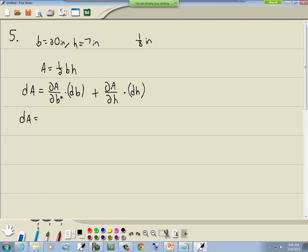Partial of A with respect to b - well, the 1/2 and h are constants, so they just stay, and the derivative of b is 1, so I drop this away. So we've got 1/2 h db. Plus, then the partial of A with respect to h. Again, the 1/2 and b are both constants, we treat them as such, so they stay out in front. The derivative of h is 1, so I drop this away, and then we put on our dh.